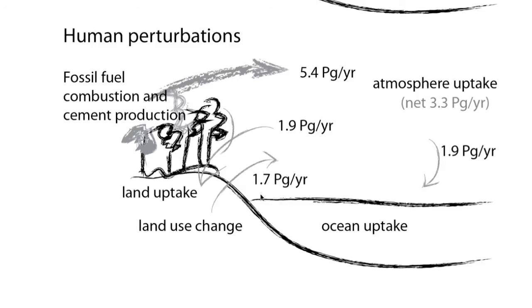Now, human activity perturbs the natural cycle. So on top of the natural cycle, we have fossil fuel combustion and cement production, which contributes 5.4 petagrams per year. Also, the land takes up some of that, but the land use change contributes some back. So the net effect is that the atmosphere uptakes more than 3.3 petagrams per year of CO2. Now there's also a net uptake by the ocean, so as explained in our jar analogy, the ocean is taking up more CO2 than it would in a natural cycle.